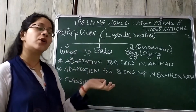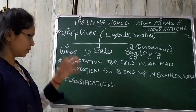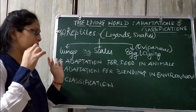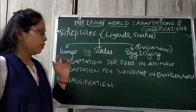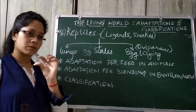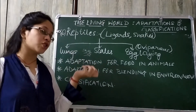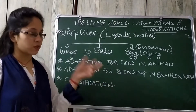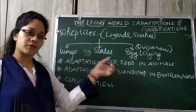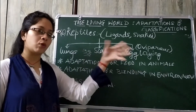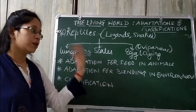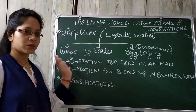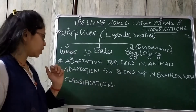Next is adaptation for food in animals. We are not going into detail here because in the textbook this section is very small. The fourth chapter covers nutrition — how animals consume their food — so all topics relating to food will be covered there.